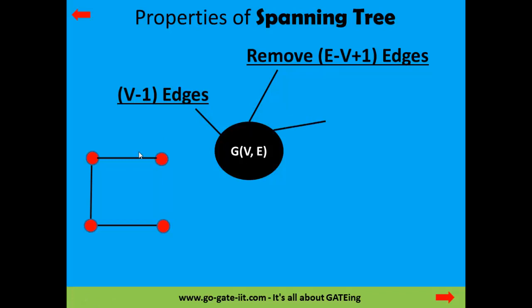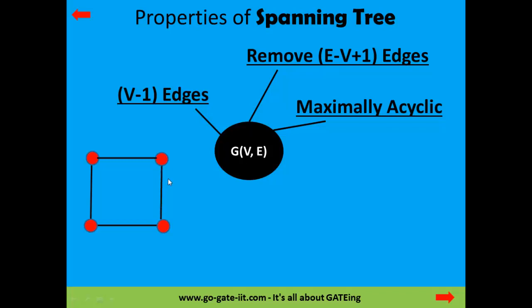The next property says a spanning tree should be maximally acyclic. This means that by adding a single edge to the spanning tree, it will give you a cyclic structure or a graph. As shown here, adding an extra edge into the spanning tree gives a graph with 4 edges and 4 vertices, which is cyclic in structure — hence maximally acyclic.